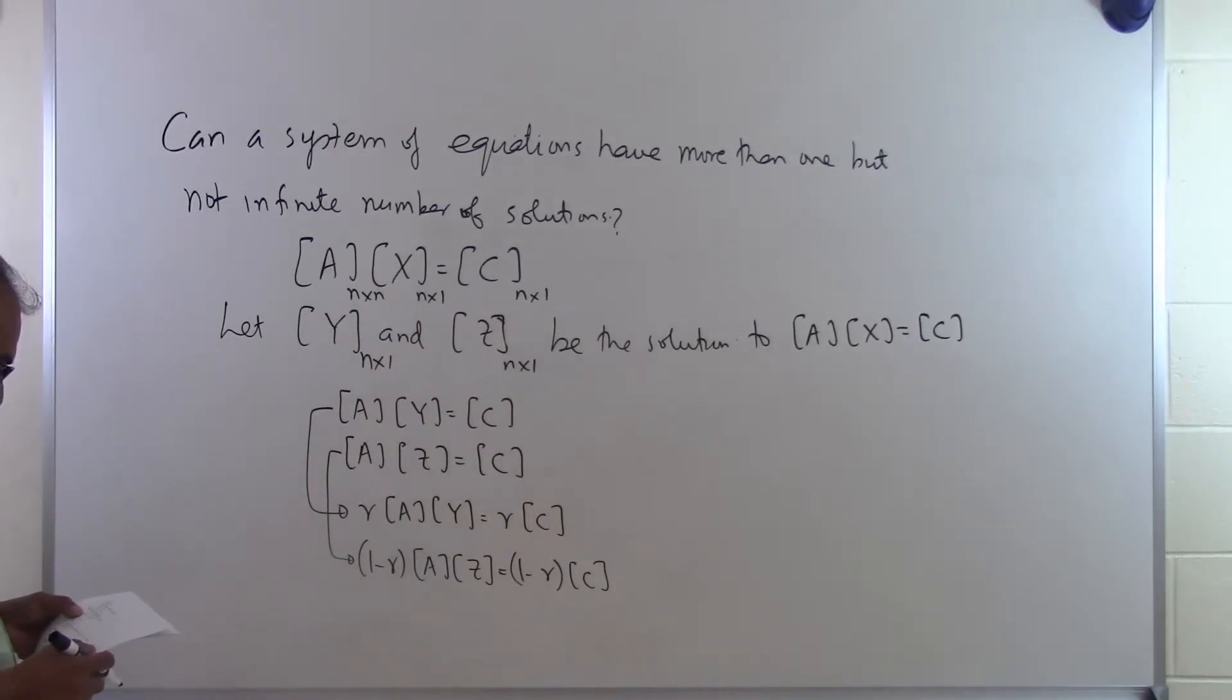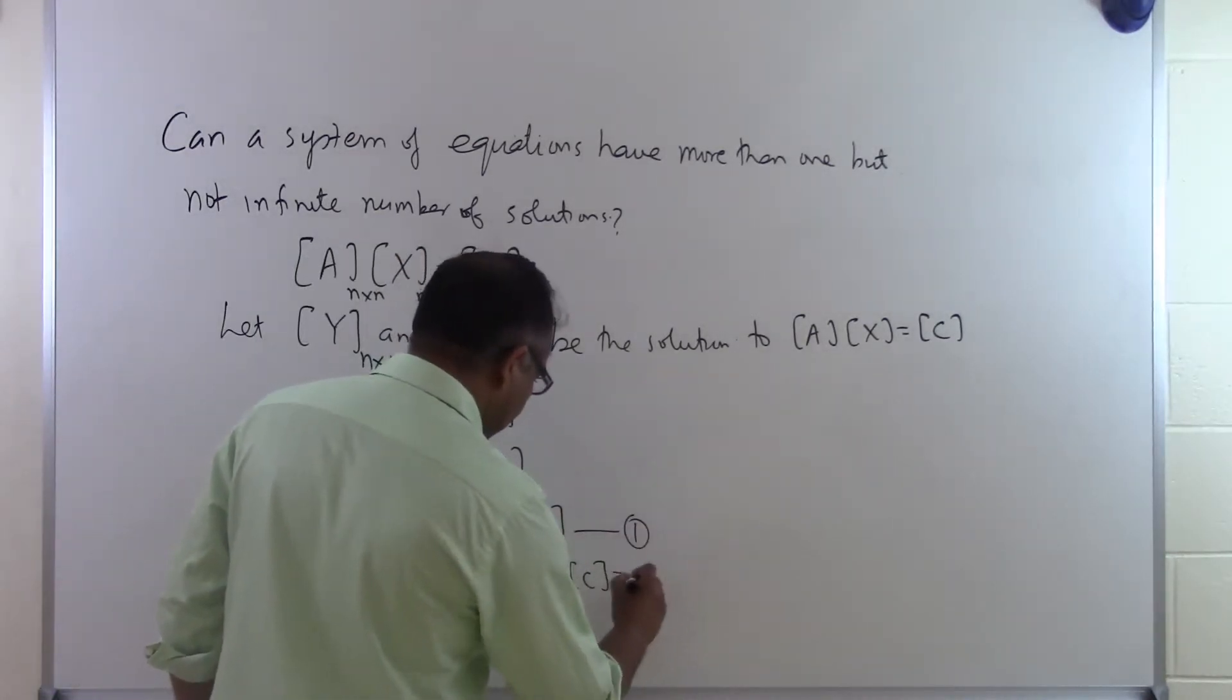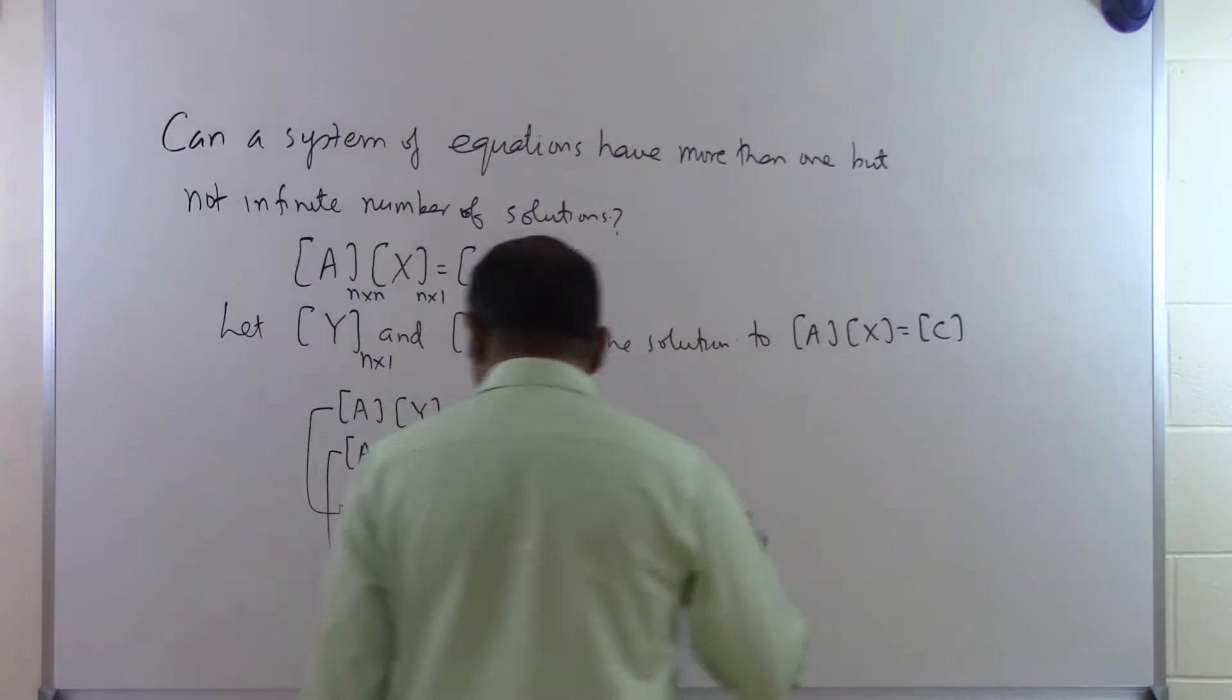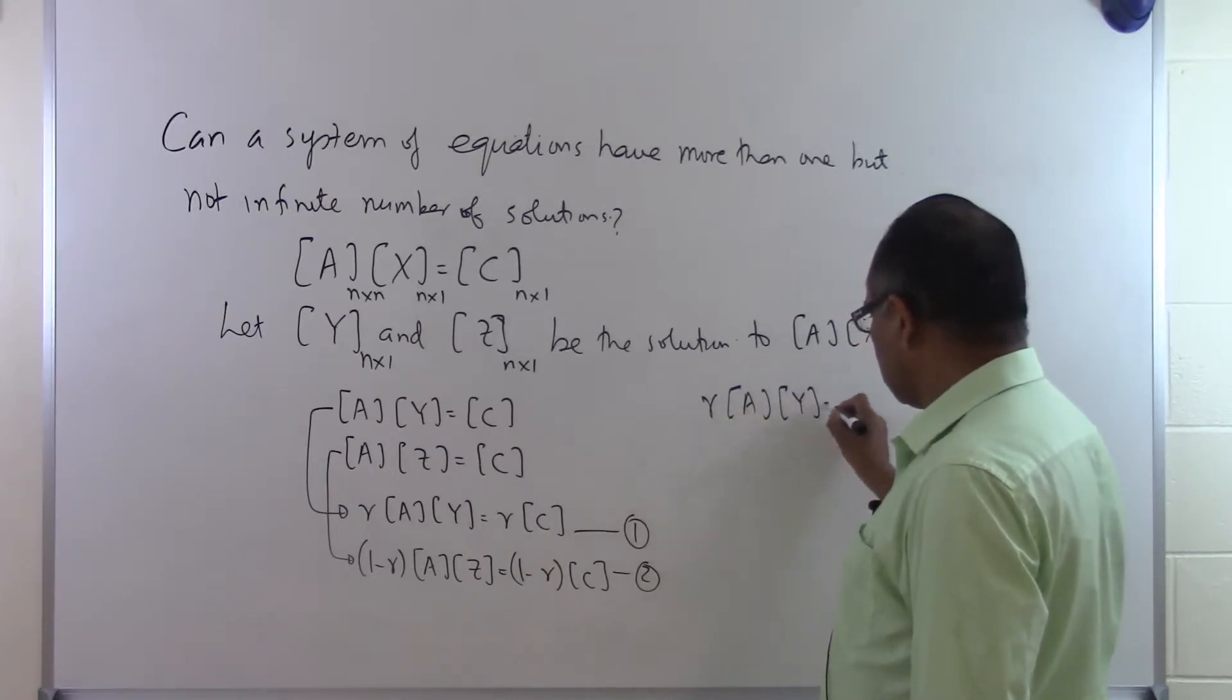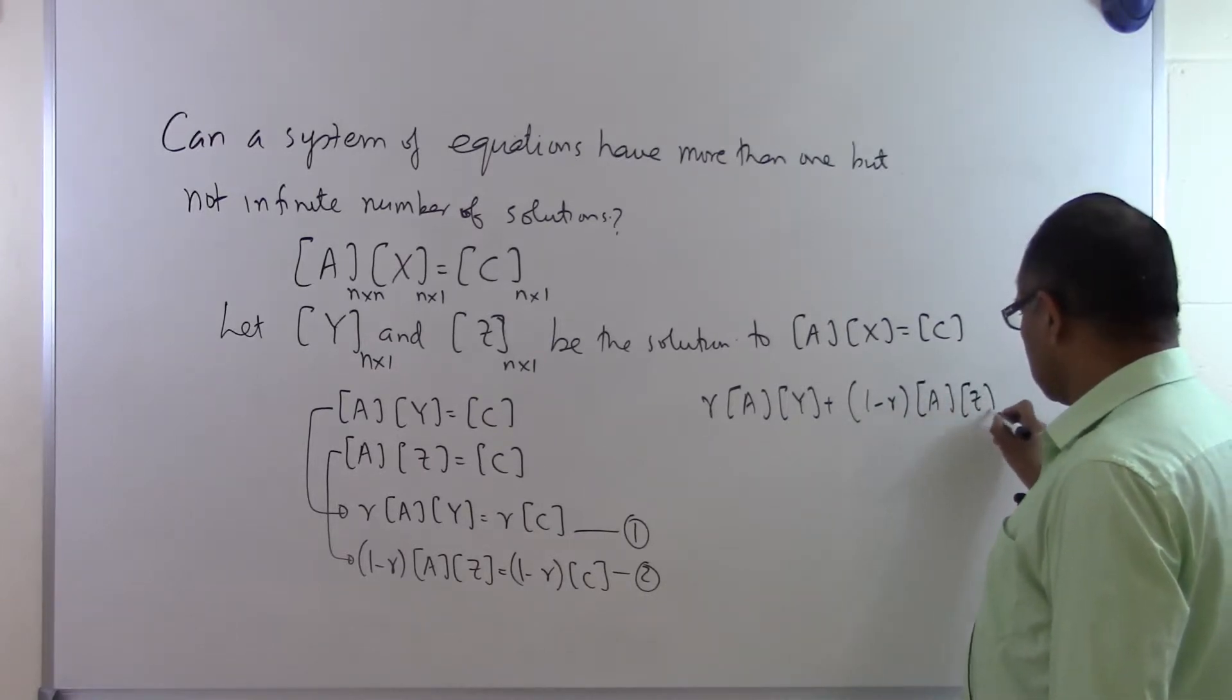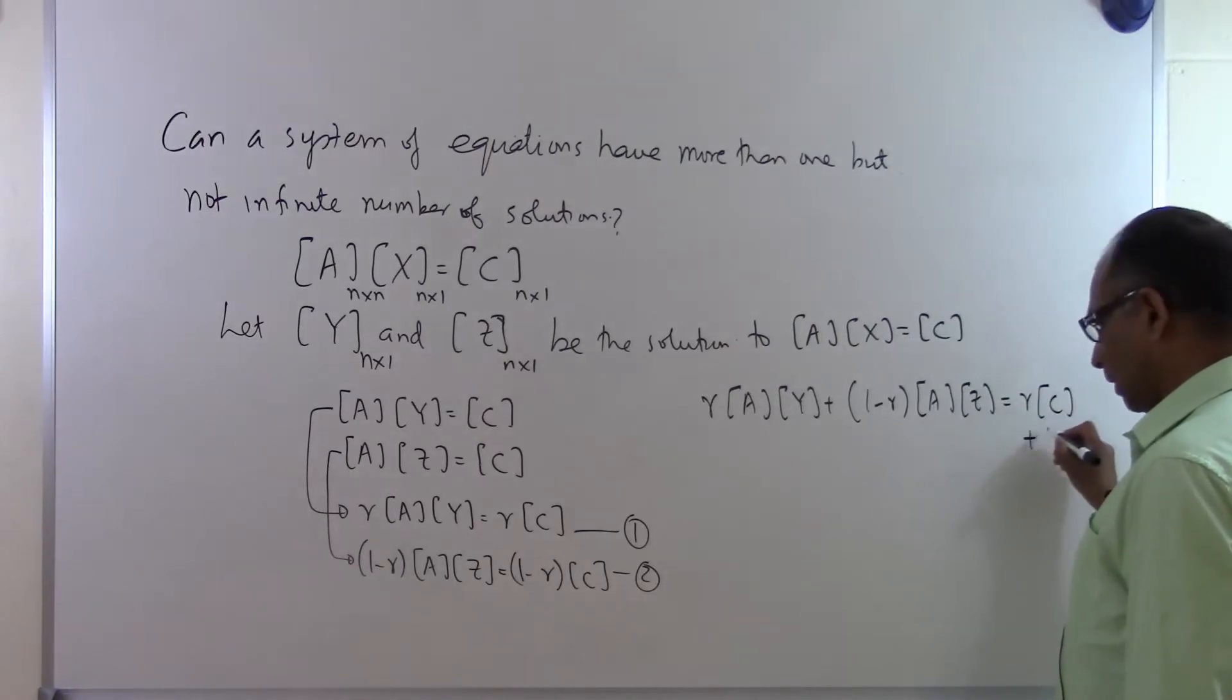So once that is happening, let's see what we get. Now we have these two sets of equations, 1 and 2, and we can add 1 and 2. We are going to get R times A times Y plus 1 minus R times A times Z is equal to R times C plus 1 minus R times C.